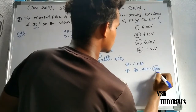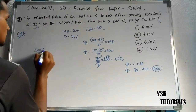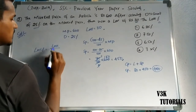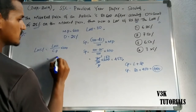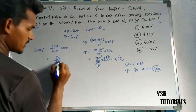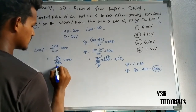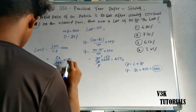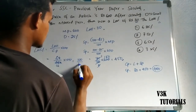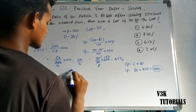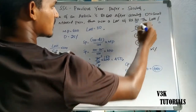We have to find the loss percentage. Cost price equals loss plus selling price, so cost price equals 30 plus 450 equals 480. Loss percent formula equals loss by cost price into 100, which is 30 by 480 into 100, giving 6.25 percent. So option 1 is the correct answer.